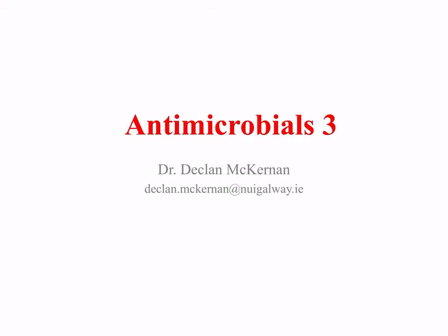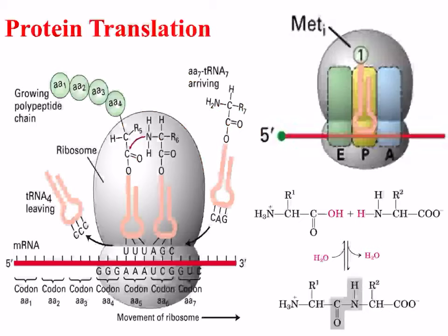In this lecture we will deal with antibacterials that interfere with protein translation. Protein translation is an essential process for cells to stay alive. Shown in the diagram on the left is the ribosome translating protein from mRNA. The smaller subunit interacts firstly with mRNA and then the large subunit comes along and attaches.